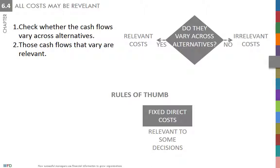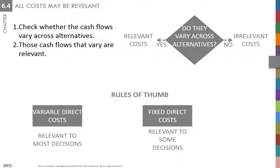A similar trap happens with direct and indirect costs. In many operating decisions, only direct costs are relevant. But again, there are decisions where indirect costs may also be. For example, all the direct costs to open a new sales office are relevant. But there may also be relevant indirect costs.